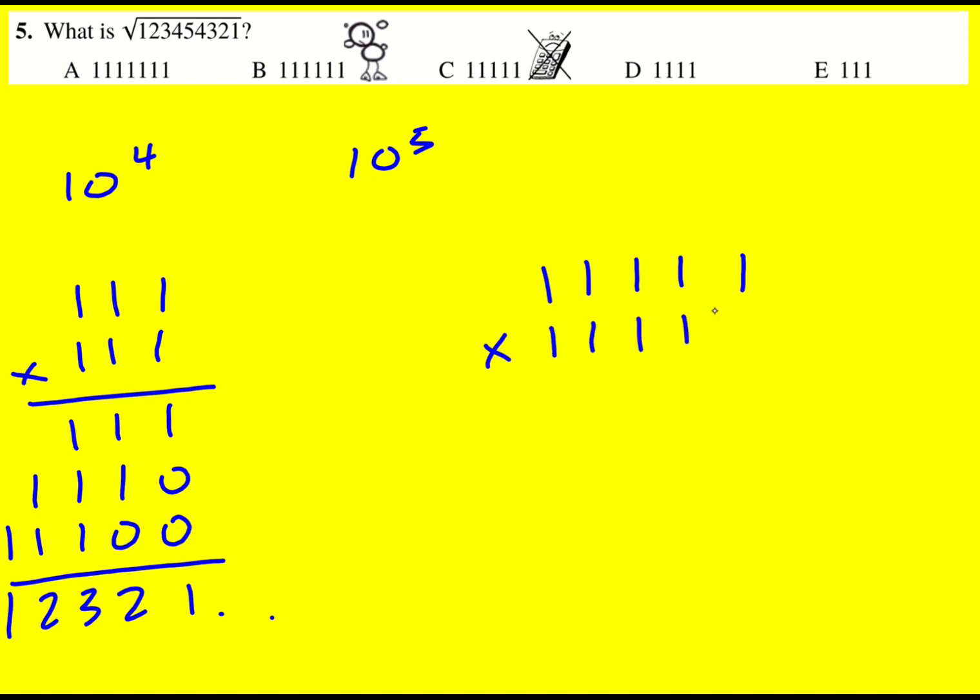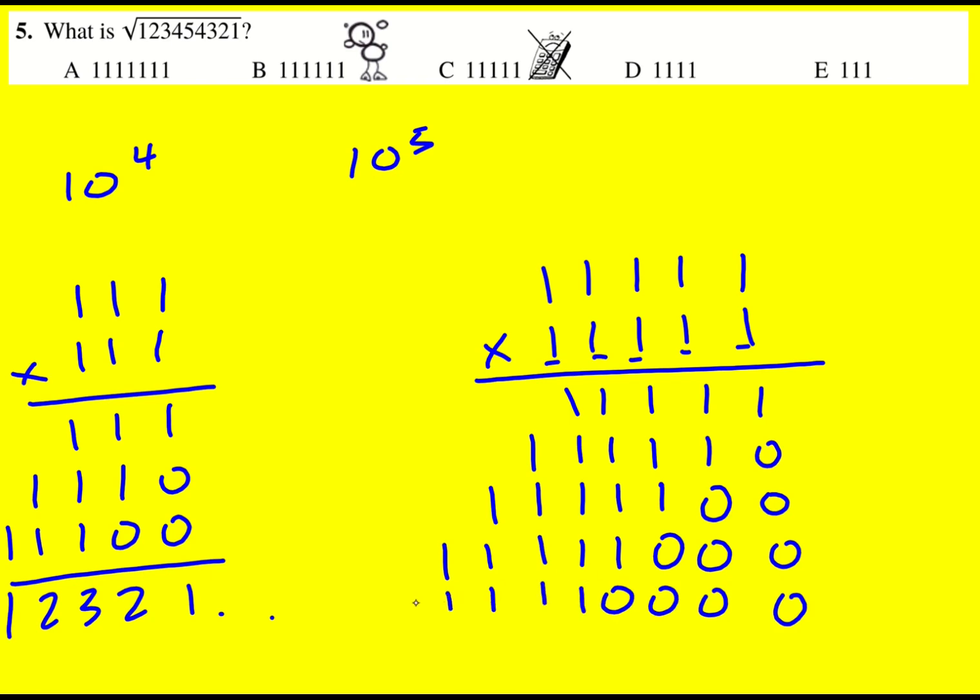I'm actually going to multiply it out because it's nice to just check that it definitely works. It's going to take a little bit of time. Keep track of which ones we've used. Main thing is just making sure your place value is sorted. And the last one. Okay, and there we have it. So the answer must be C.